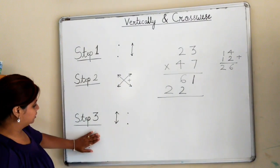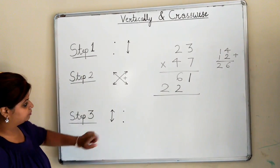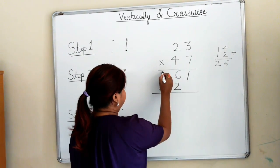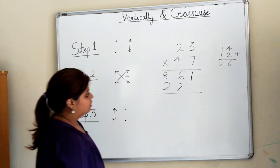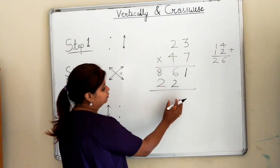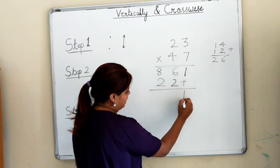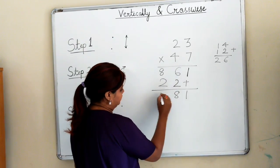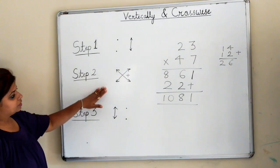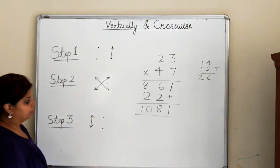Now step 3 is multiplying the numbers at the tens place. 4×2 is 8. Once these 3 steps are done, the same way you add in conventional multiplication, you do the same. 1 is added here, 6+2 is 8, and 8+2 is 10. So the answer is 1081. If you see, the time reduces to half.